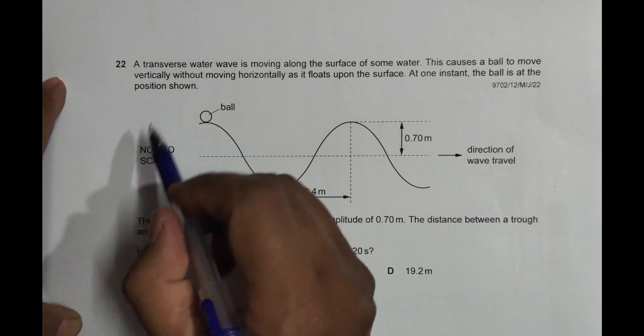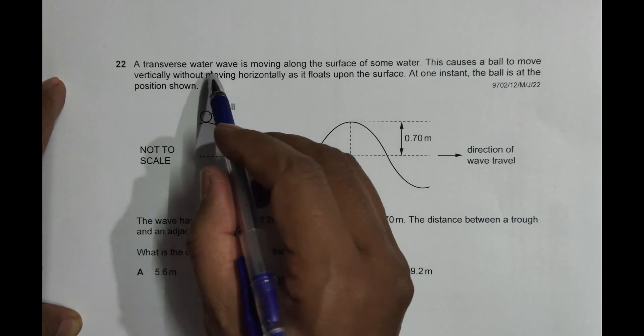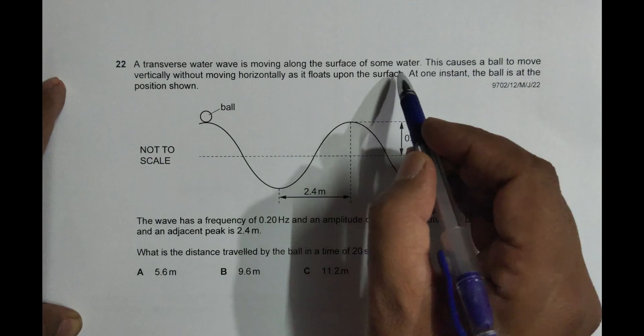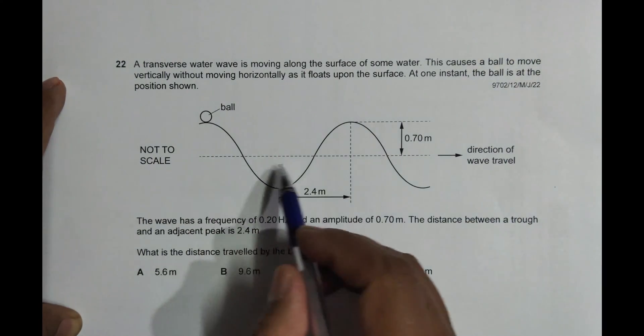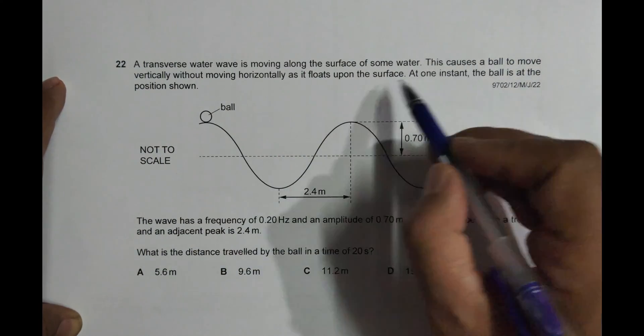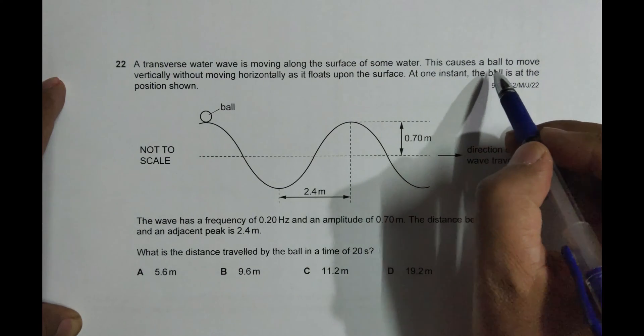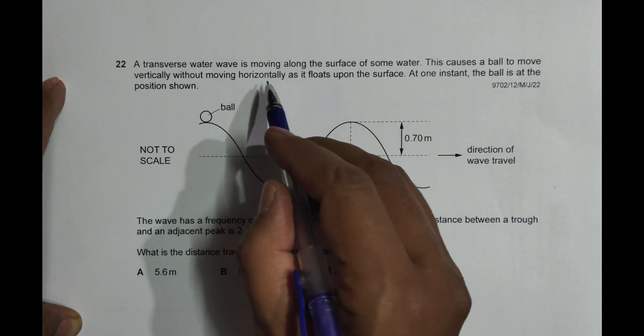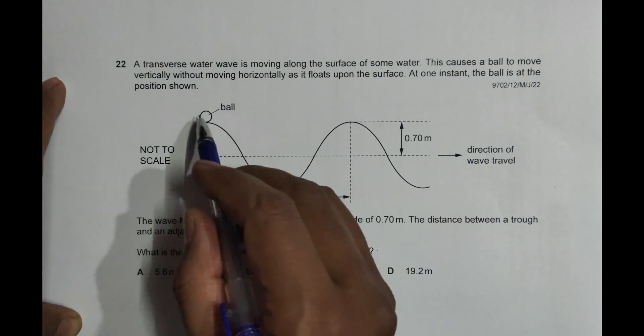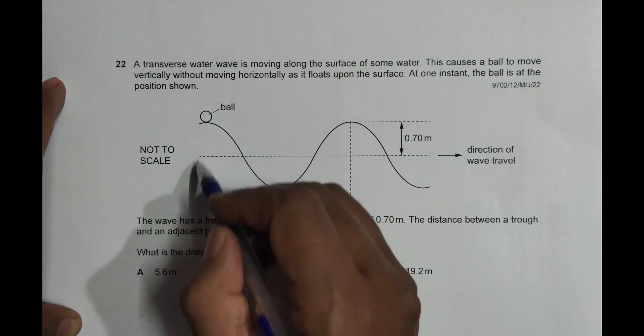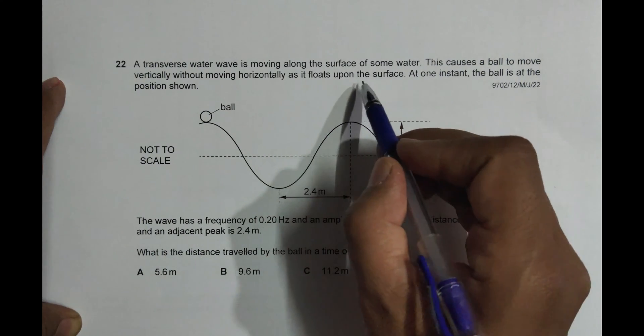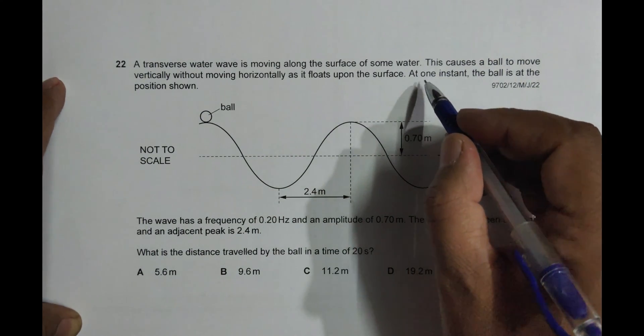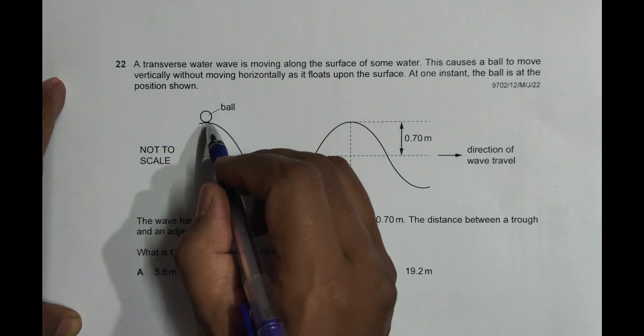As you can see a wave here, it says a transverse water wave is moving along the surface of some water. This causes a ball to move vertically without moving horizontally. The ball moves just vertically like this as it floats upon the surface. At one instant, the ball is at the position shown, the topmost position.